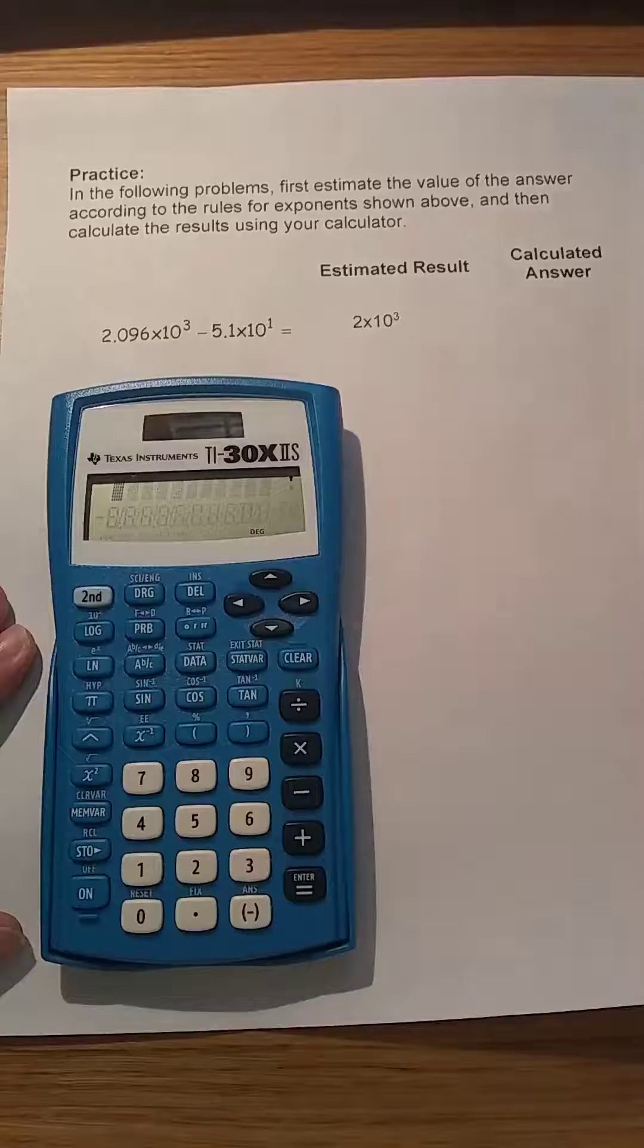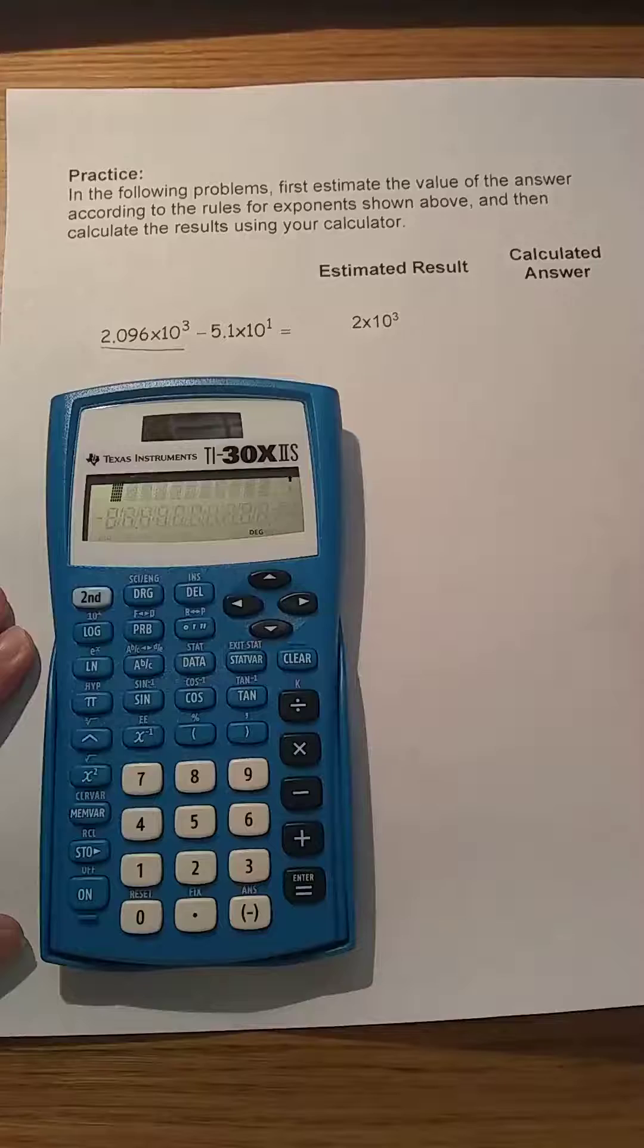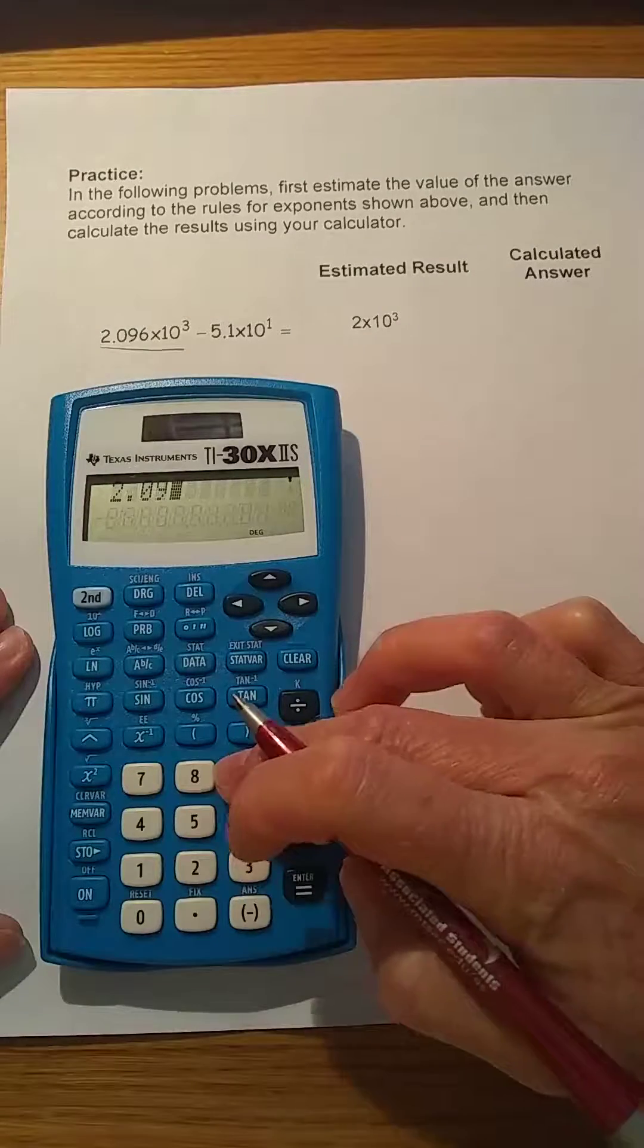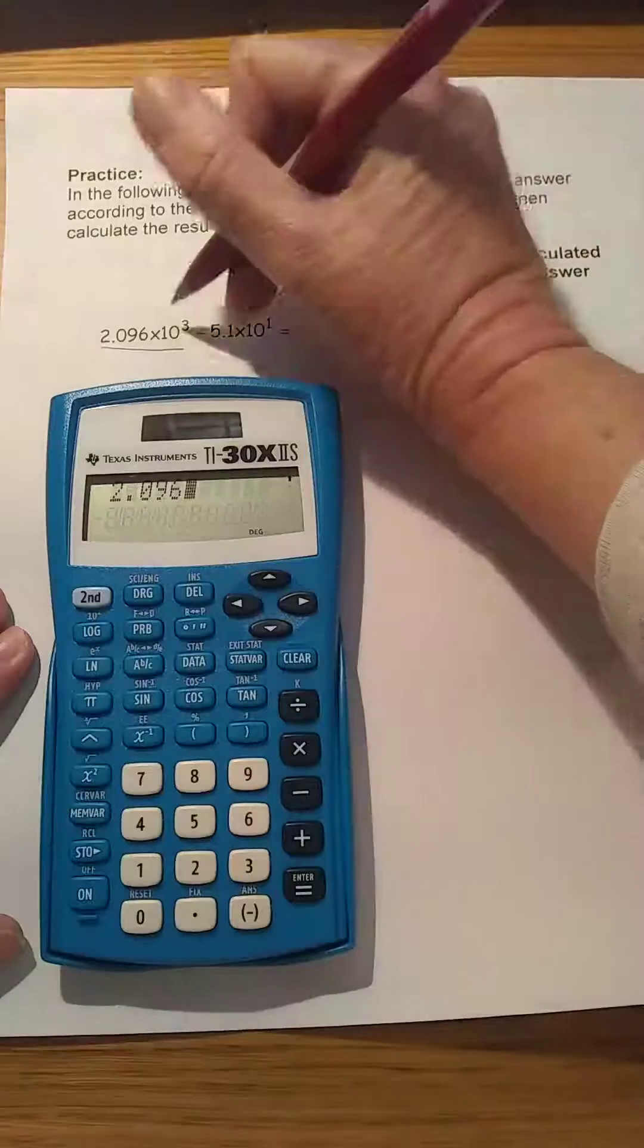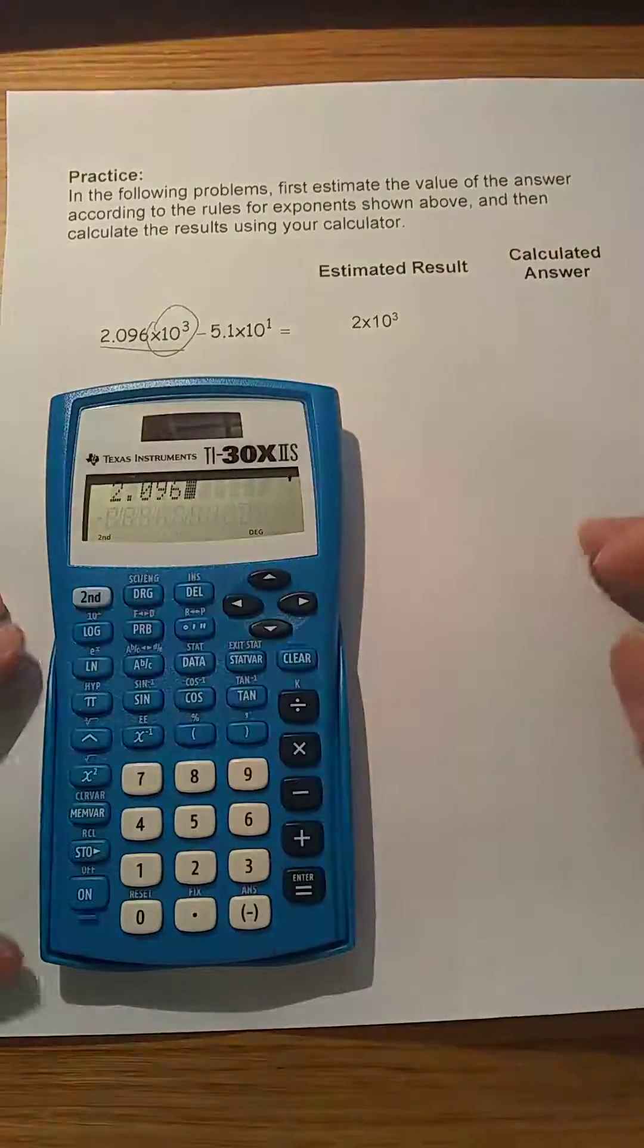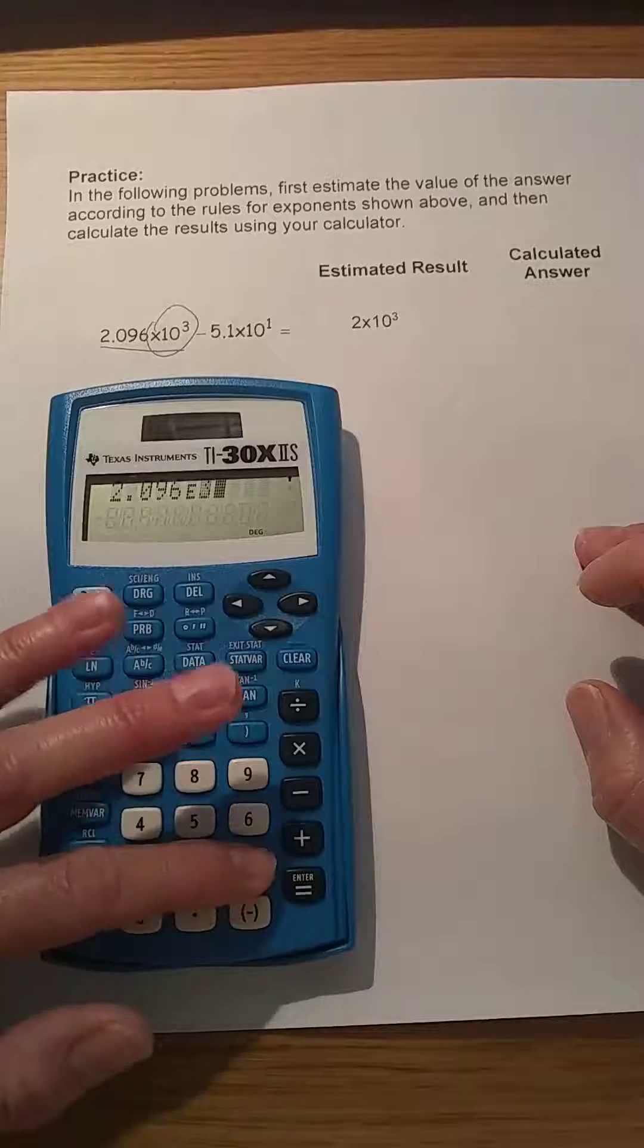In the first example, we need to enter 2.096 times 10 to the third. On our calculator, we'll enter 2.096, and then to enter the exponent, we'll use the second function, the ee key, and then enter the exponent, 3.